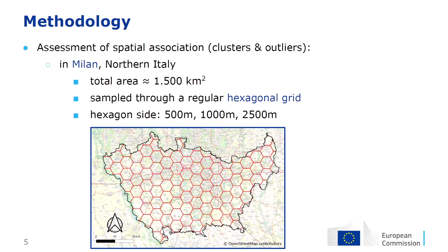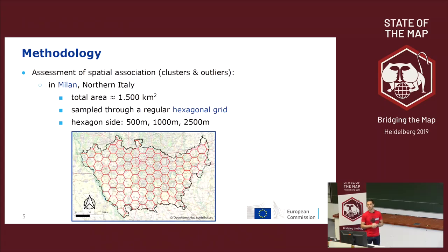Our case study is the area of Milan province in northern Italy, where we had a great State of the Map last year. This area is almost 1.5 square kilometers, and it's sampled using a regular hexagonal grid. We tried three sizes of hexagons: a side of 500, 1,000, and 2,500 meters.